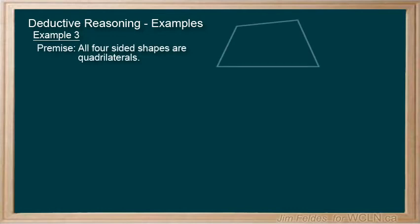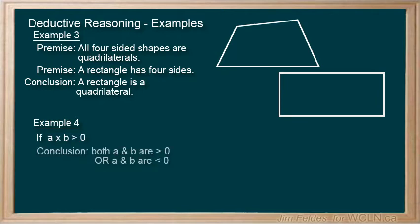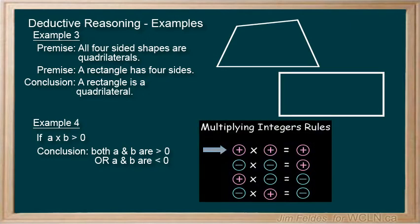All four-sided shapes are quadrilaterals. A rectangle has four sides. A rectangle is a quadrilateral. We can extend deductive reasoning a bit deeper with an example like this. If A times B is greater than zero, then we can make the statement that both A and B have to be greater than or less than zero. In other words, both must be positive or both must be negative. We can make this statement because of the rules we have for multiplying integers with signs.